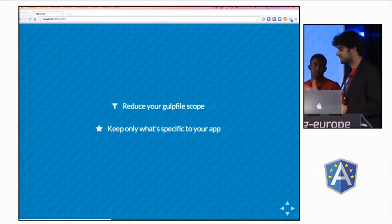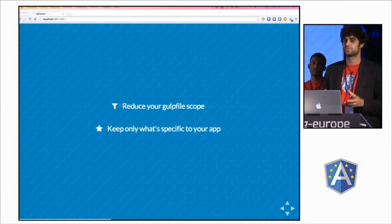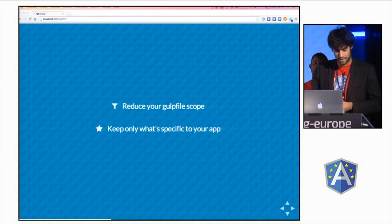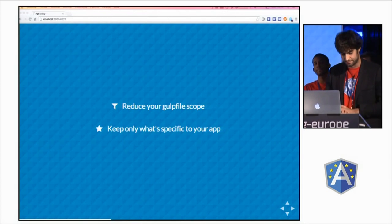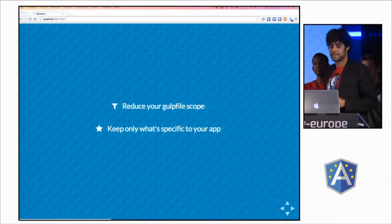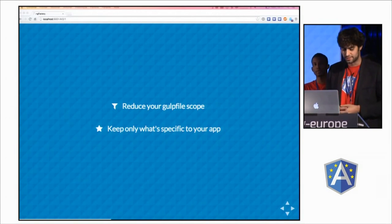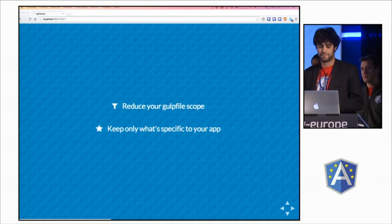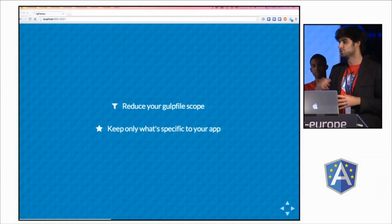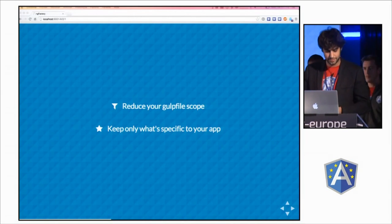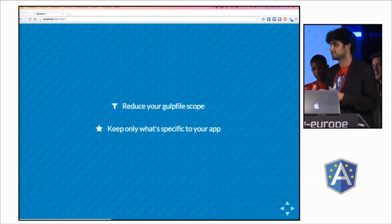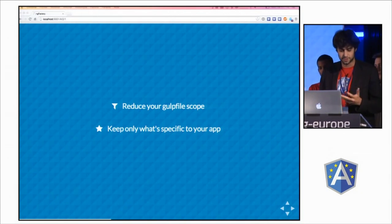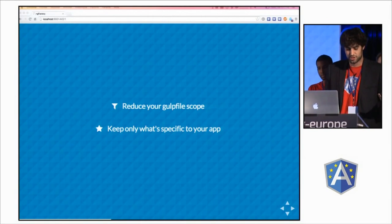With that in mind, the first thing we wanted to do was to reduce the size of your Gulp files, abstracting away what was really not specific to your application. Gulp being a very new ecosystem, it does evolve at a very high pace. Modules get deprecated, and new ones are always coming — so it's really hard and it takes time to just keep up to date. And even if you've started with a good Yeoman generator, time goes by and you're just not up to date.